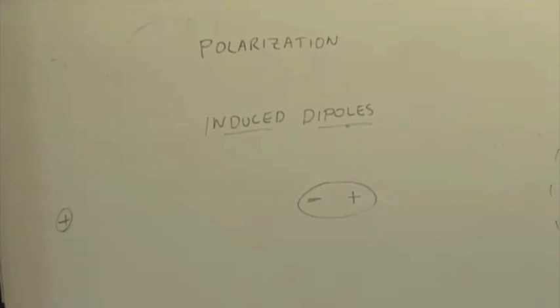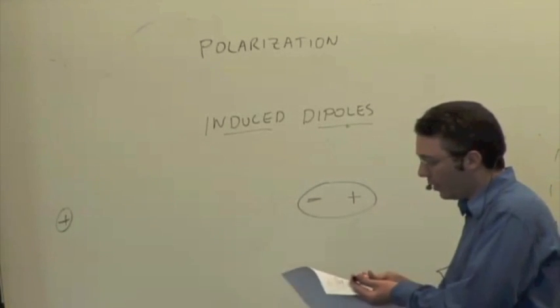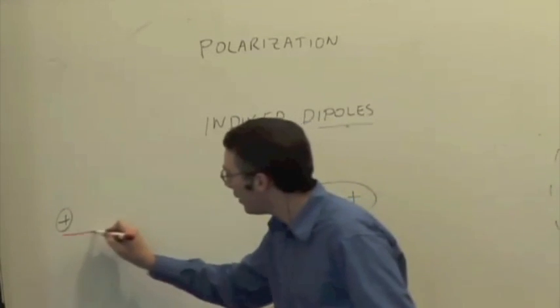Well, the dipole itself is going to create an electric field at the location of the original charge. So the electric field due to the dipole, if we're closer to the negative end, is going to be pointing that way.